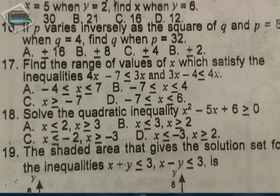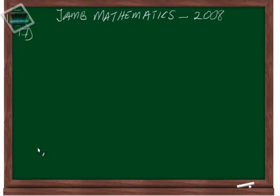Question number 17 is: find the range of values of x which satisfy the inequalities 4x minus 7 less than or equal to 3x, and 3x minus 4 less than or equal to 4x.